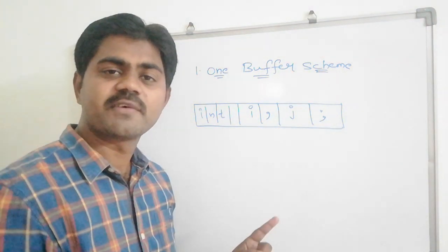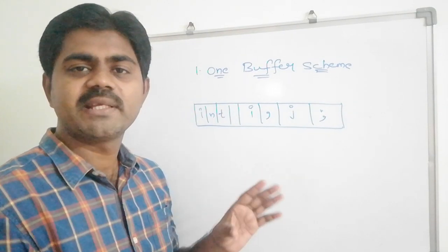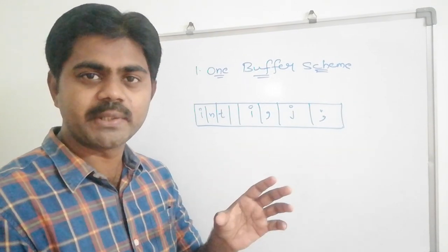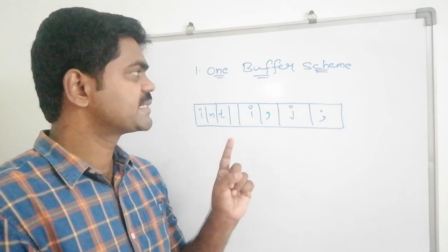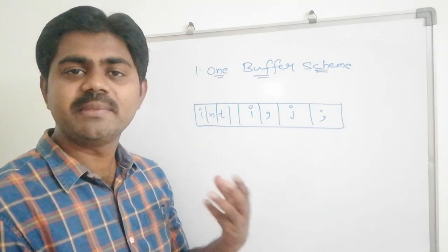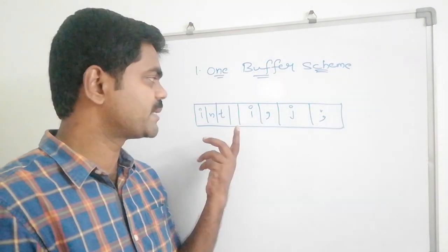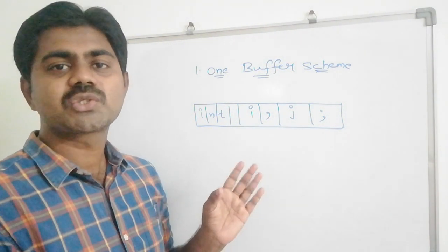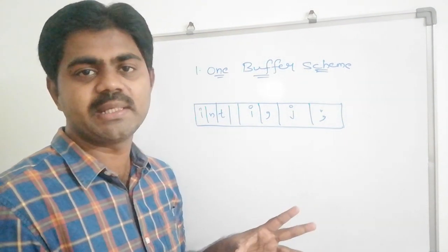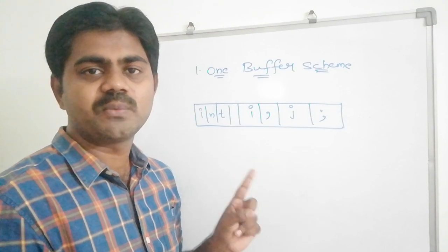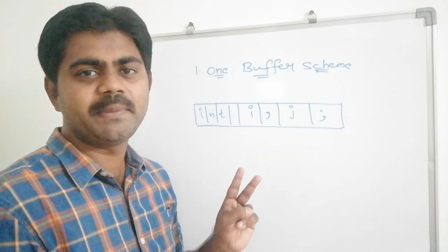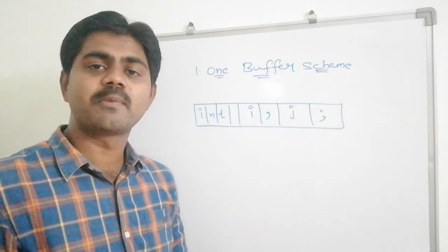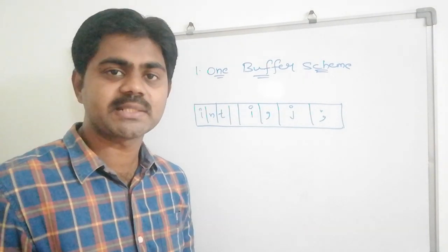So what is this one buffer scheme? A buffer is nothing but storage — we are storing some input here. In the one buffer scheme, we have a limited amount of storage. We have two pointers: one is BP and another is FP. BP stands for Begin Pointer and FP stands for Forward Pointer.